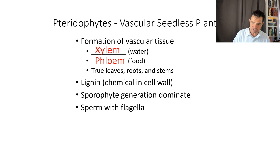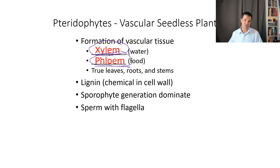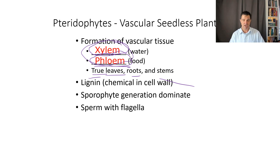Next we get into the vascular seedless plants. The difference between vascular and nonvascular is the presence of vascular tissue, which in plants is xylem and phloem. We'll talk more about these later on. But xylem is generally used to transport water in the plant, and phloem is generally used to transport food. So anything that has true leaves, roots, and stems on it has xylem and phloem in them. Botanists are pretty particular about what they let be called a leaf, root, or stem — unless it has those structures in it.